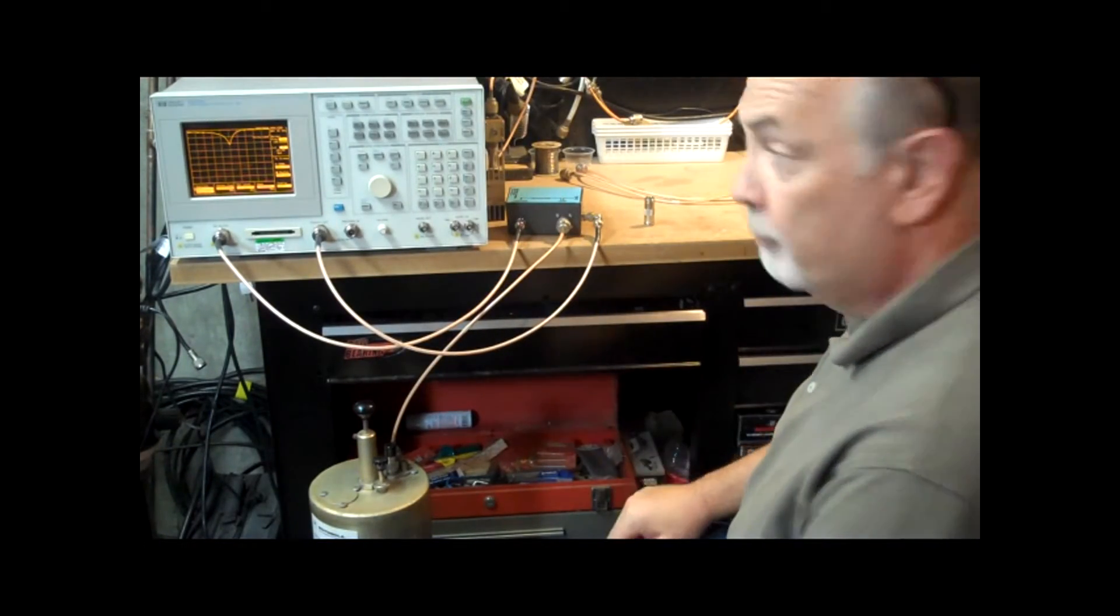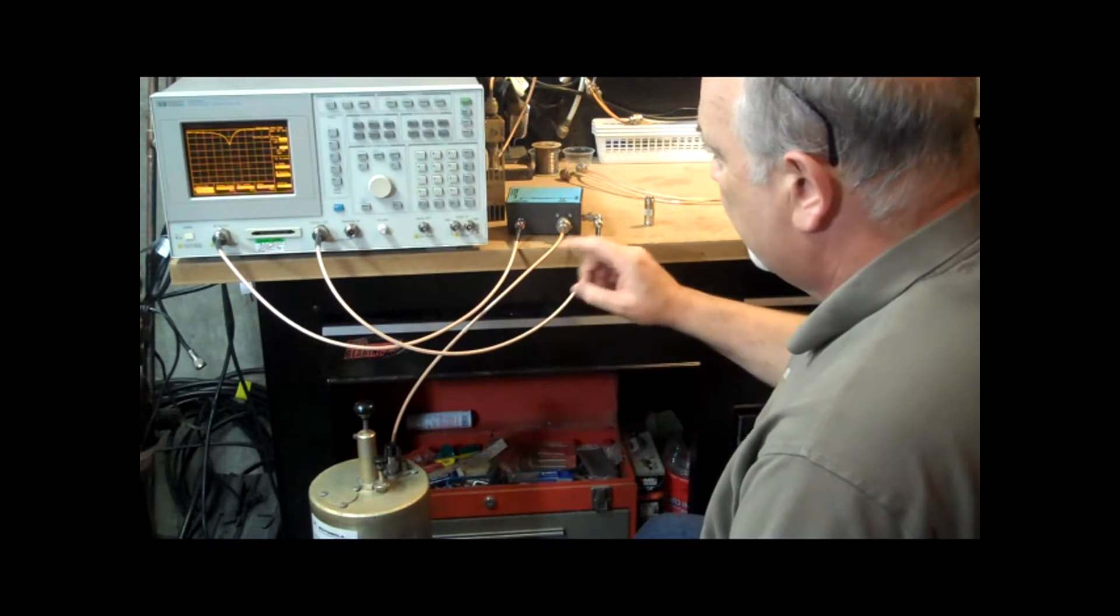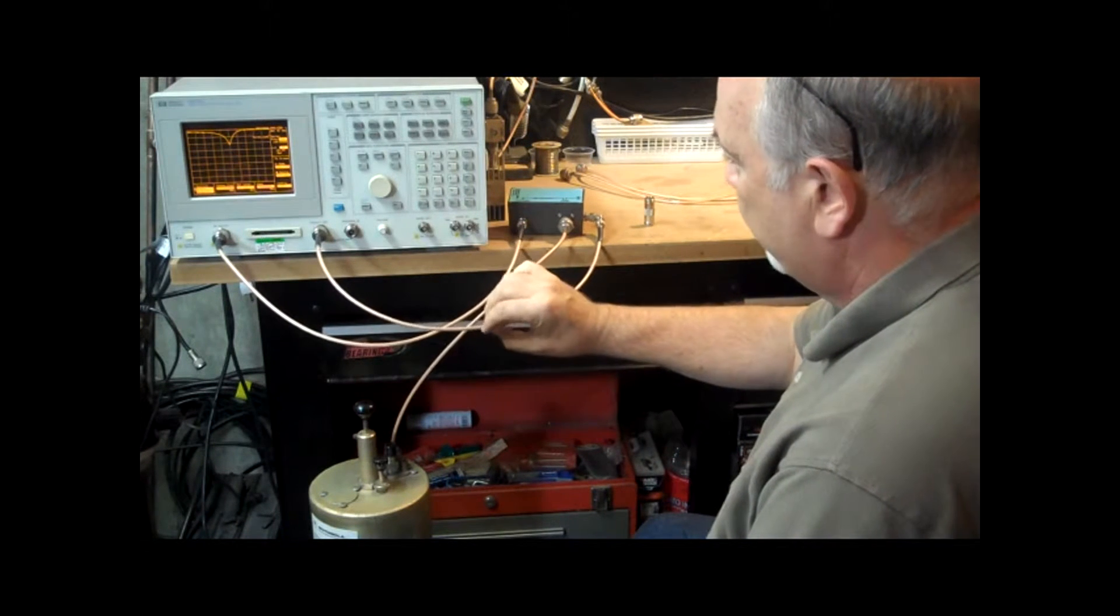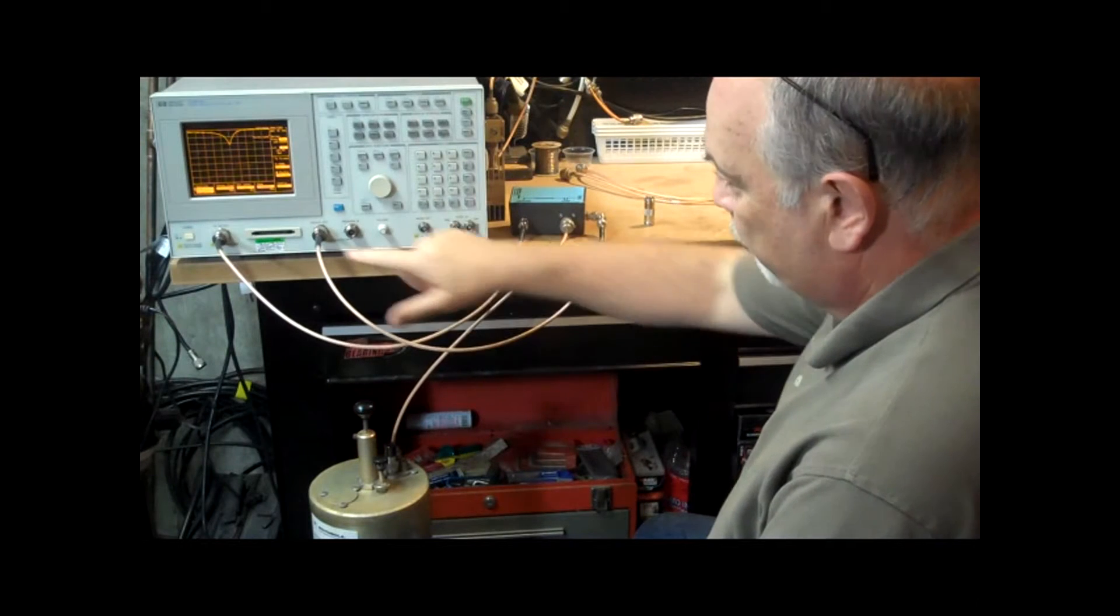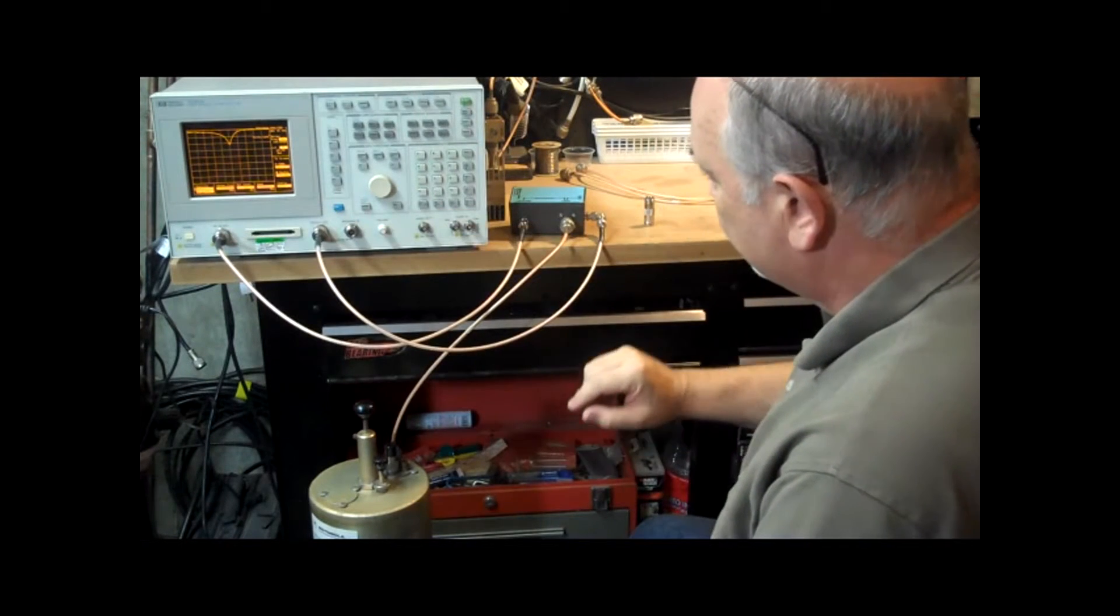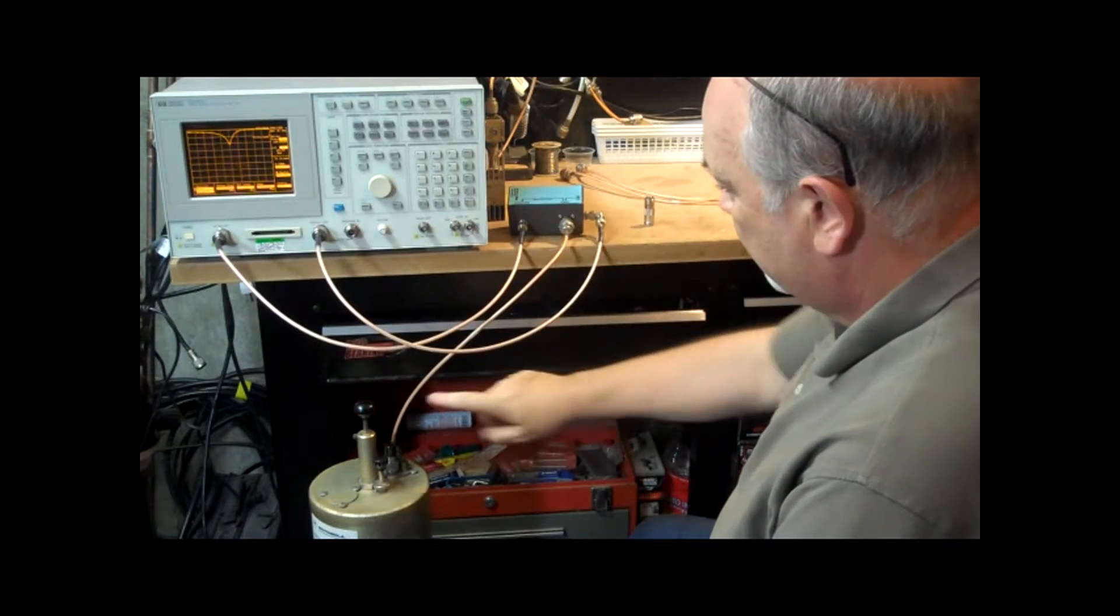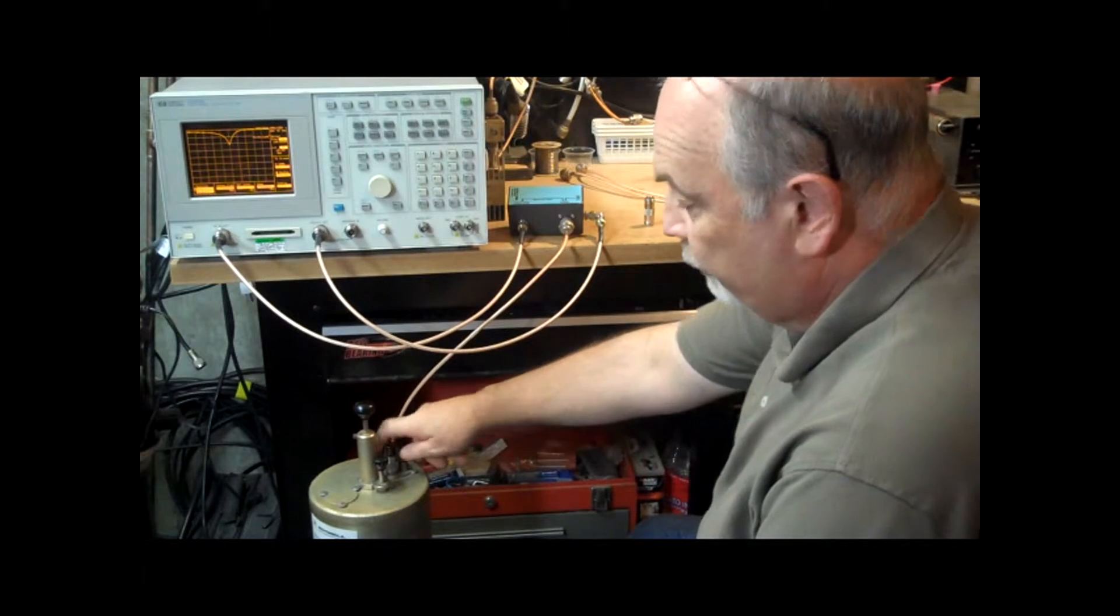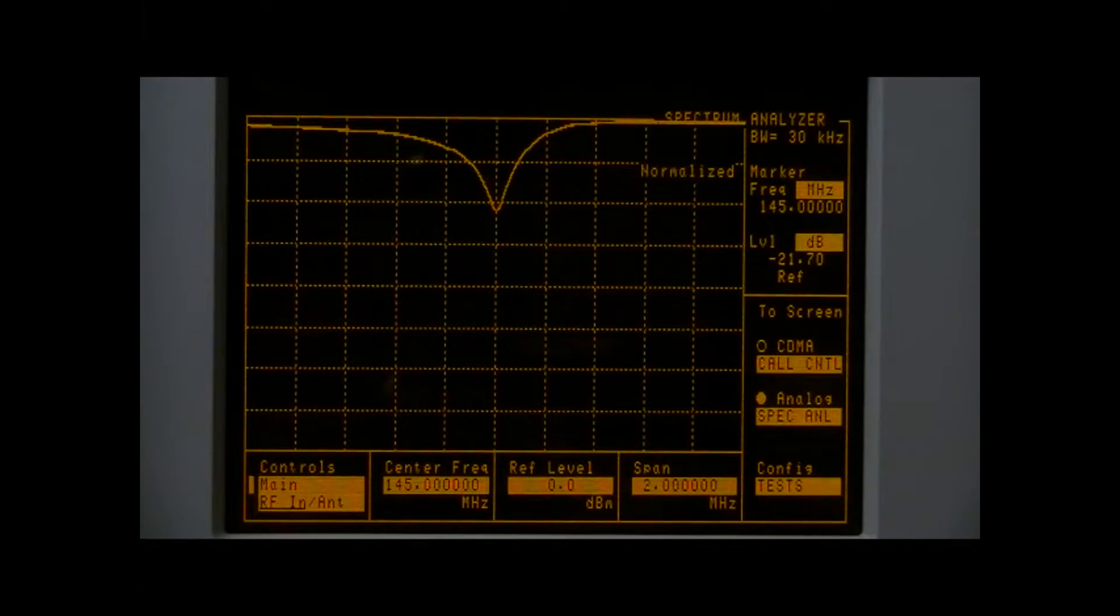Okay, so here's our same setup using return loss, and you can see that I have the generator going into the return loss bridge, and the output of the return loss bridge going to the spectrum analyzer. And then the device under test port on the return loss bridge is going to the input of the cavity. And then I have a 50-ohm load on the other port of the cavity.